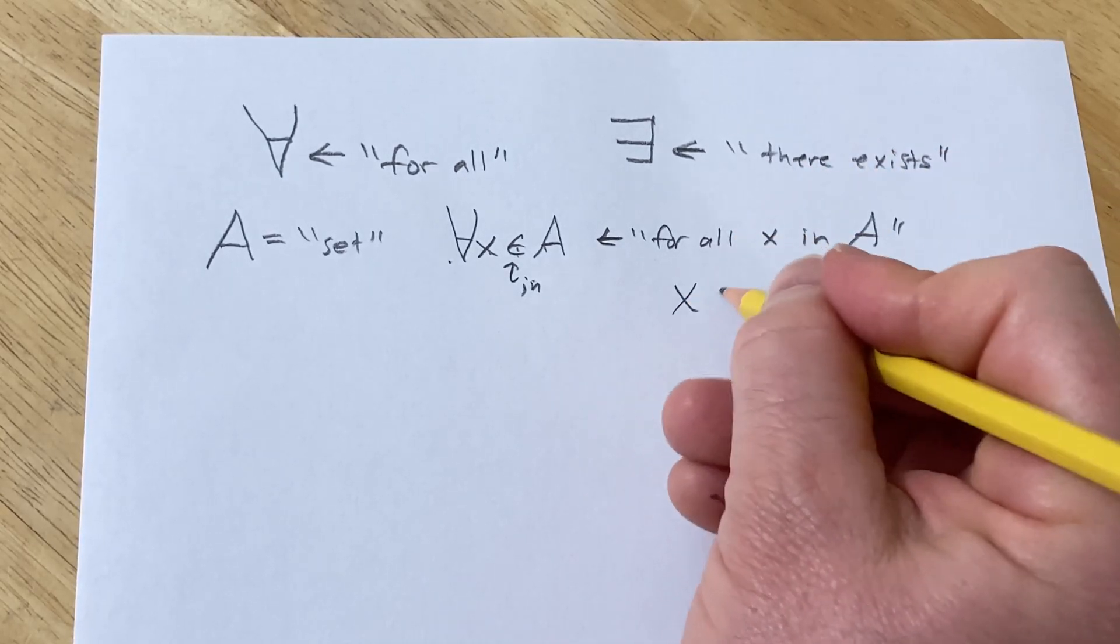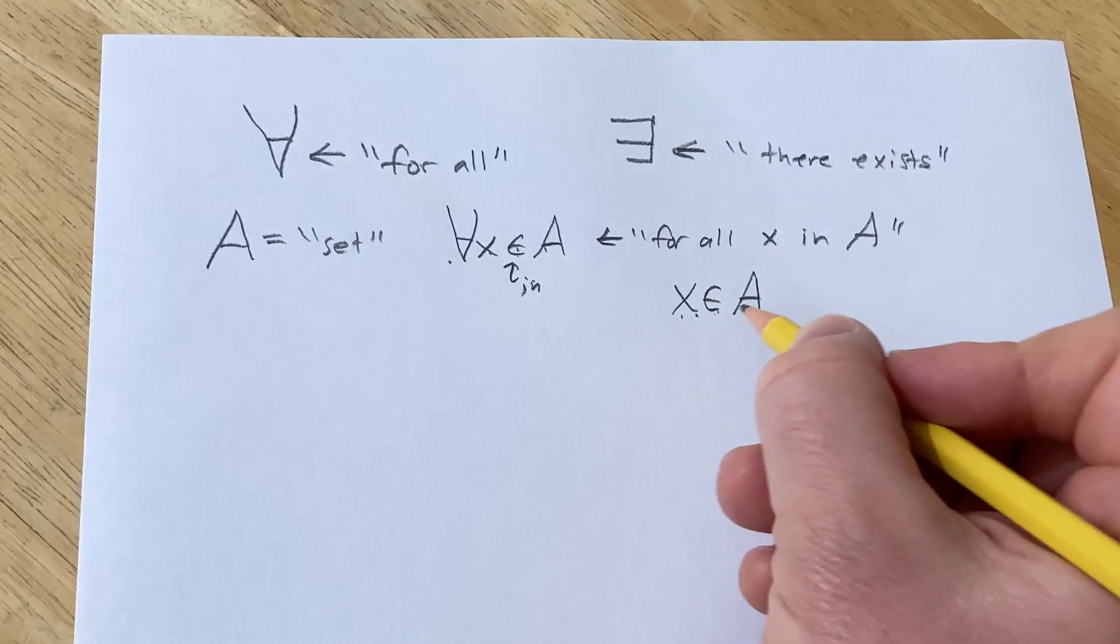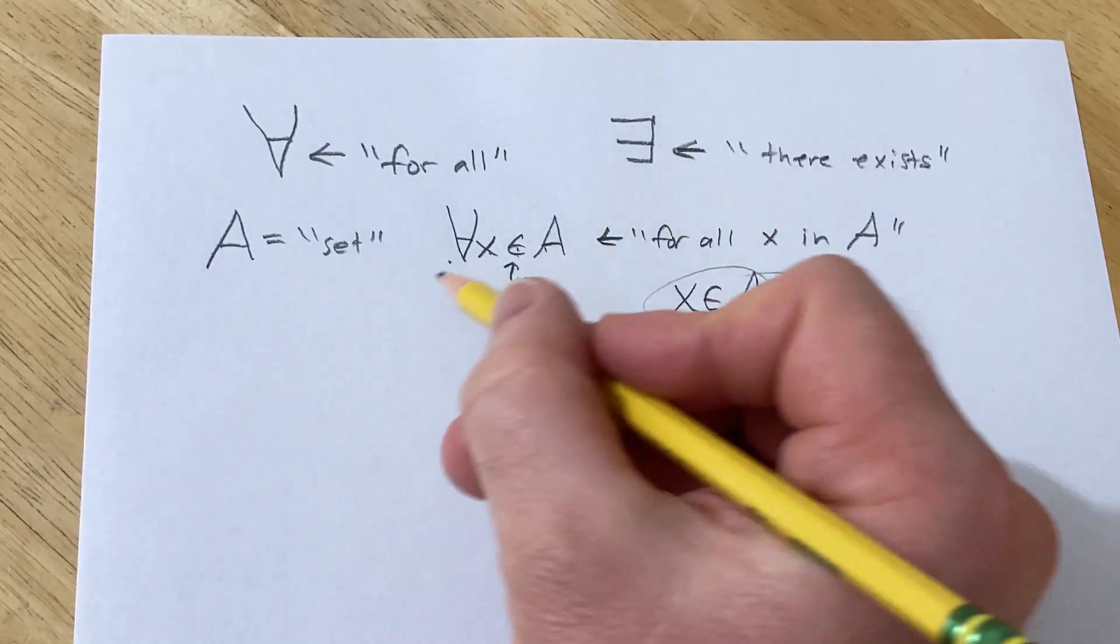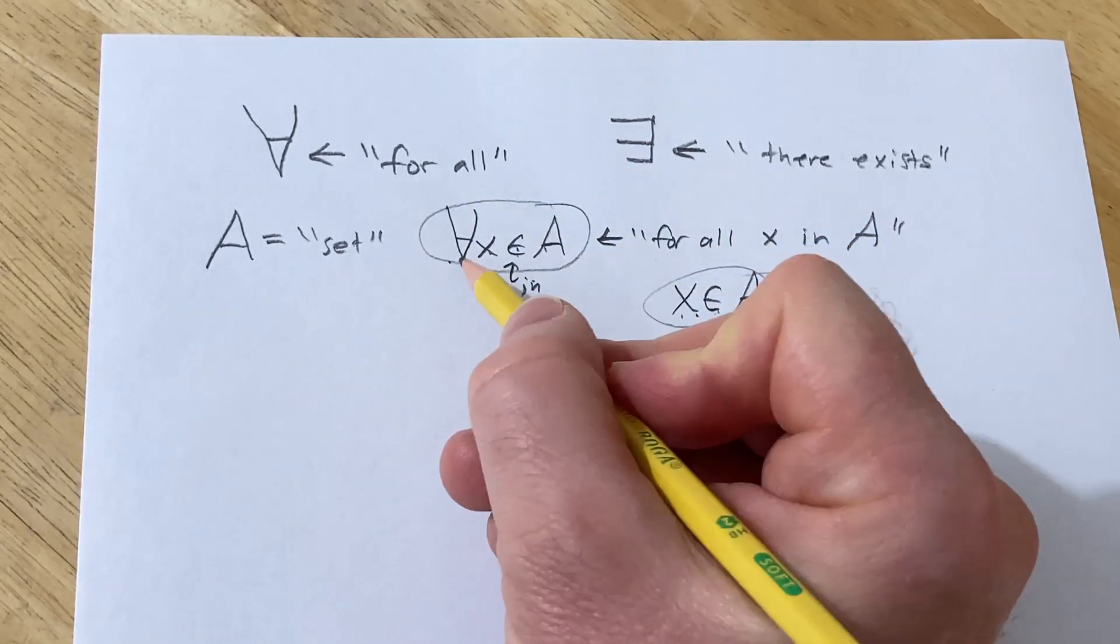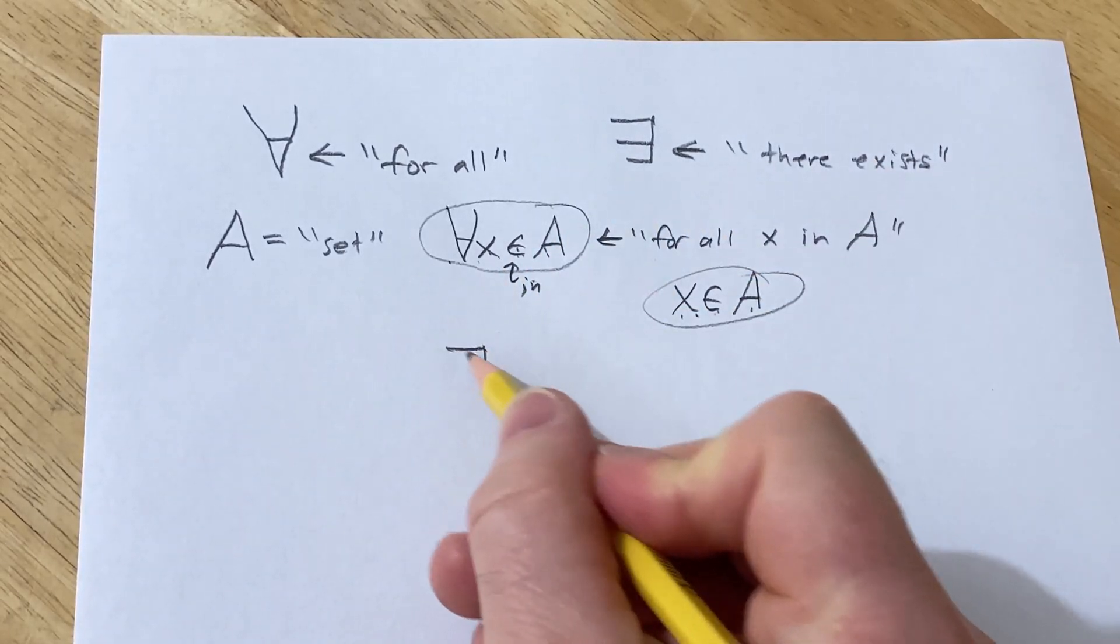So if someone just says X in A, you can say X is in A. You can say X is an element of A. X belongs to A. X is a member of A. So there's a bunch of different ways to say it. But typically when you look at it, you just say for all X in A.